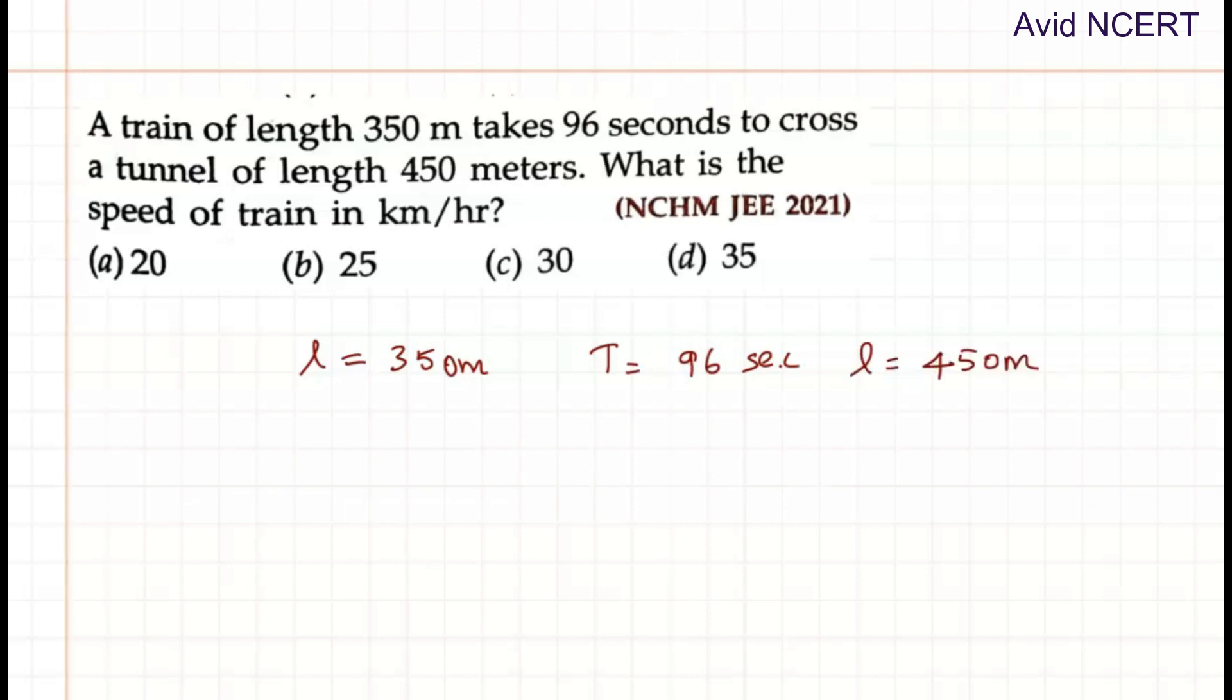The question here is to find the speed of the train. Speed of the train in kilometers per hour equals question mark. The formula we know here is speed equals distance by time.